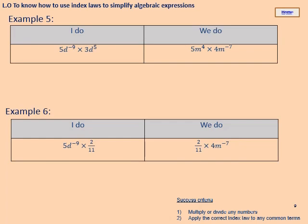For example five: 5d to the power negative nine times 3d to the power five. Multiply the numbers first: 5 times 3 gives 15. Then apply the index law to the common d terms: d to the power negative nine plus five gives d to the power negative four. Answer: 15d to the power negative four. Pause the video, copy this down, and have a go at the 'We do.'